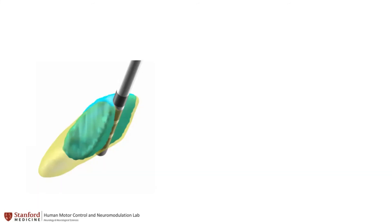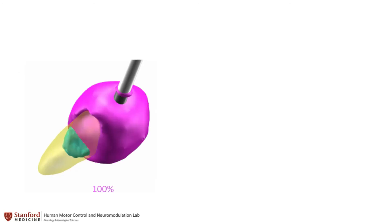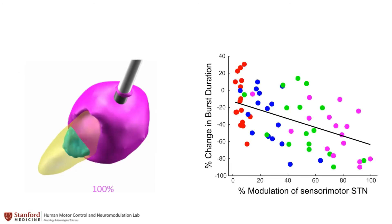We calculated the volumes of tissue modulated at each intensity of DBS and found that greater overlap of the sensory motor portion of the STN was associated with greater shortening of beta burst durations.